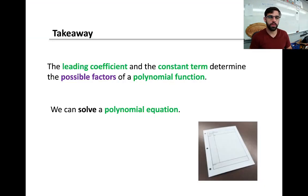All right, so takeaway. We can use the leading coefficient and the constant term, the front and the back, to determine all possible factors for a function. And that gives us a basis or a list of factors to use the factor theorem on to look for factors. It makes the job way simpler.